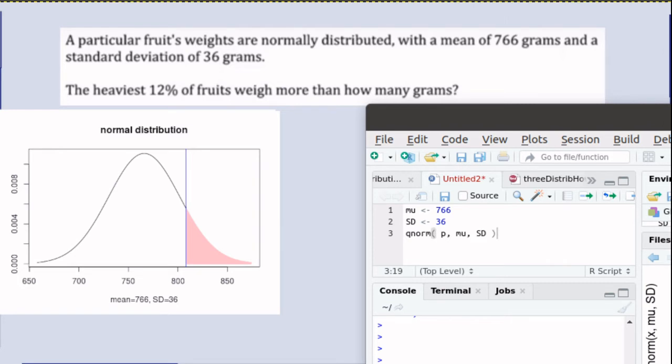There is a function in R called qnorm. What it does is it finds a quantile or like a percentile. If we tell R what the percent is below the number that we're looking for on the x-axis, if we tell it what the area is below that number, then it will tell us what that number is.